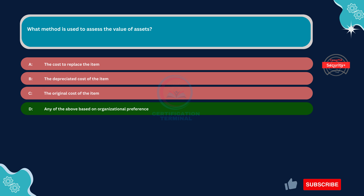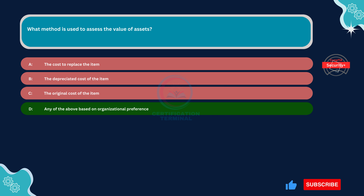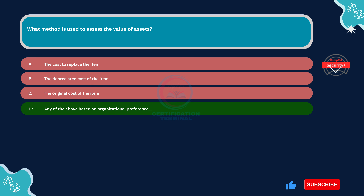Option C, the original cost of the item, is incorrect. Using the original cost of an item as the sole method for assessing asset value is a straightforward approach, but it may not always reflect the current value or condition of the asset accurately. Some organizations may prefer to consider depreciation or replacement cost in their asset valuation process.